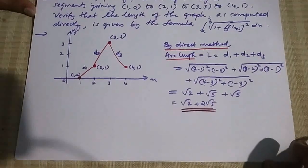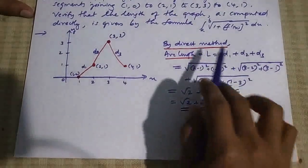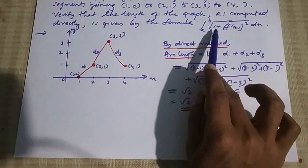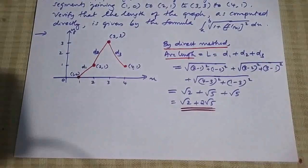Now, by using the formula, we have arc length = integral from a to b of √(1 + [f'(x)]²) dx.